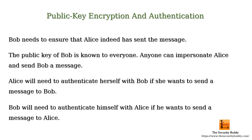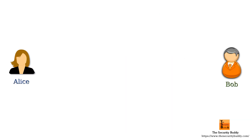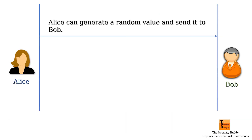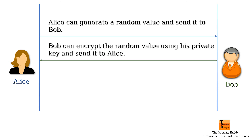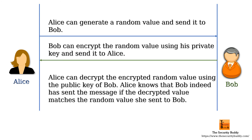Here is how it works. Alice can generate a random value and send it to Bob. Bob can encrypt it using his private key and send it to Alice. Now Alice can decrypt the encrypted random value using the public key of Bob. Alice knows that Bob indeed has sent the message if the decrypted value matches the random value she sent to Bob.